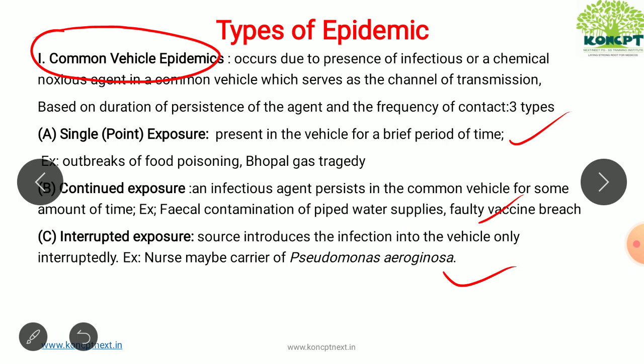For single exposure, at one point in time the vehicle is contaminated and everyone is affected. The best examples are food poisoning outbreaks as well as the Bhopal gas tragedy. For continued exposure, the best example is piped water supply that is contaminated due to faecal contamination — you keep getting cases continuously until that vehicle has been cleaned.